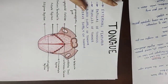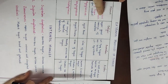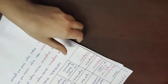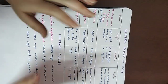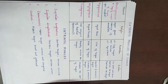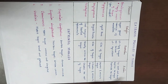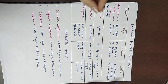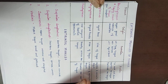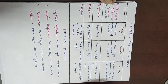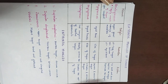Now we will learn the most important topic: the muscles of the tongue. The tongue is divided into right and left parts, so there are eight muscles on each side — four extrinsic and four intrinsic. Intrinsic muscles are those entirely within the tongue, and they change the shape or size of the tongue. Extrinsic muscles are those that attach into the tongue from outside, and they help the tongue in movement.